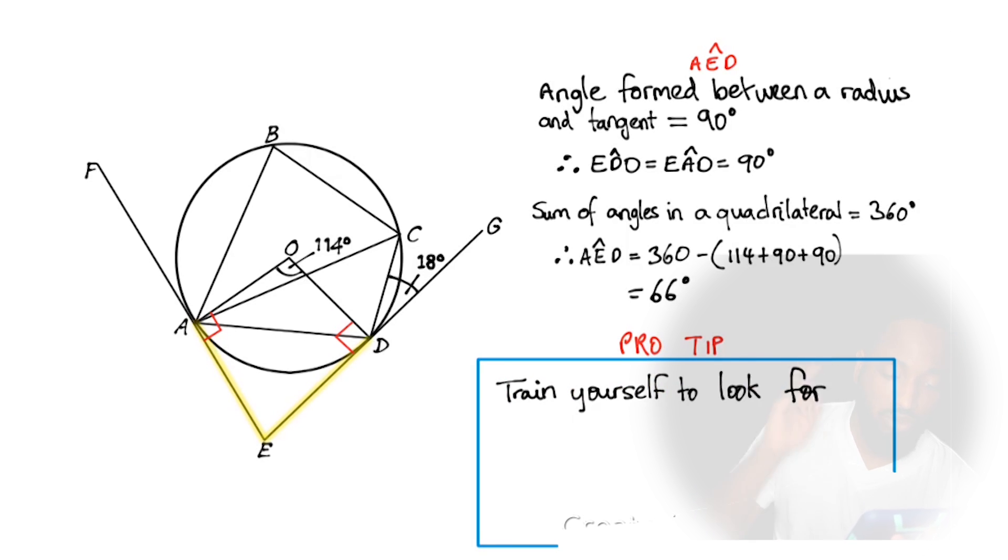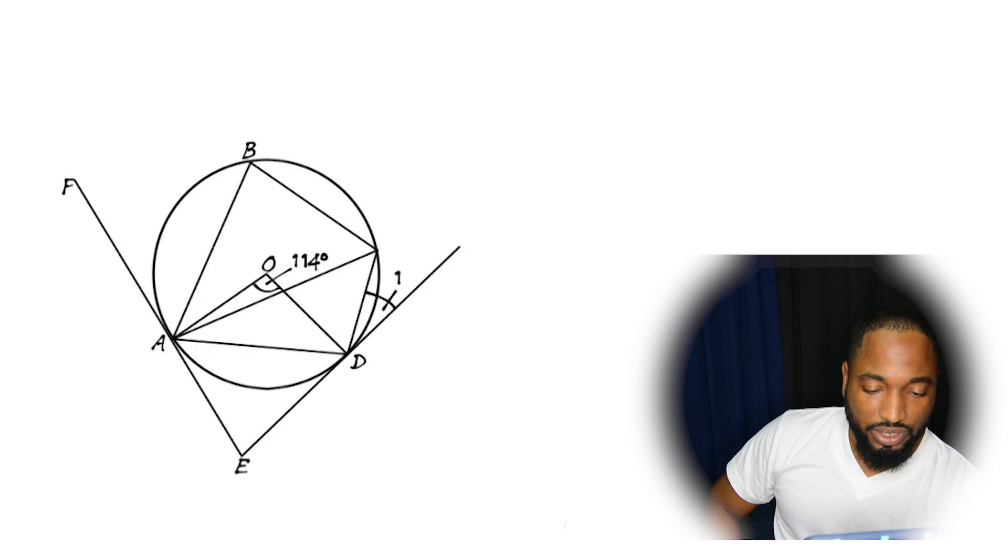Train yourself to look for triangles, isosceles triangles especially, and situations where you can get 90 degrees, 180 degrees, 360 degrees, whatever. You're looking for those situations whose them things supposed to be popping out. Let's see what else we got.